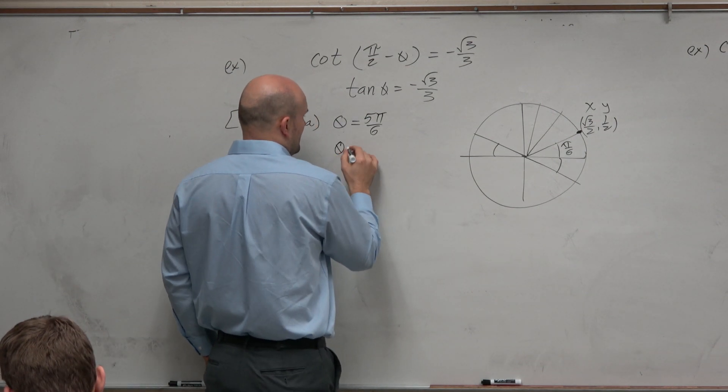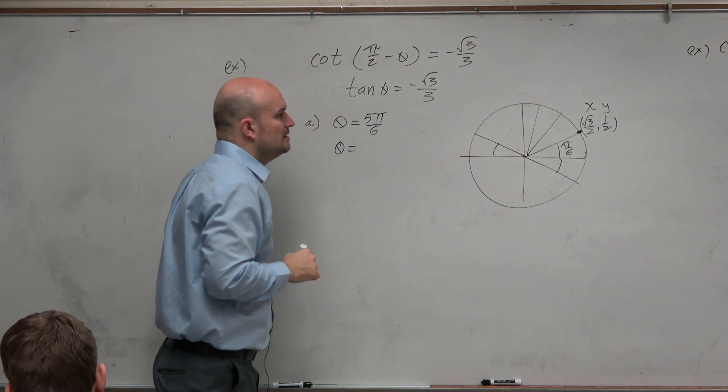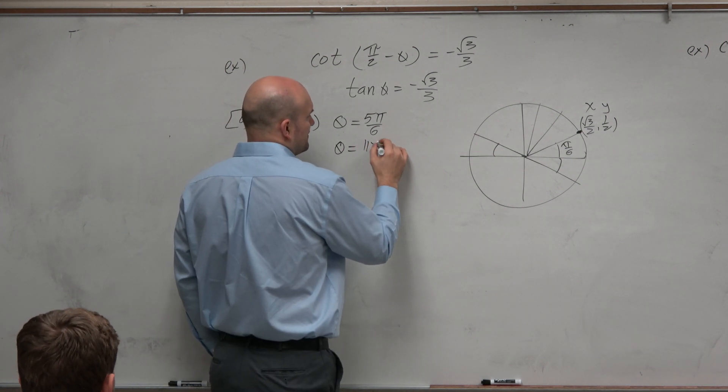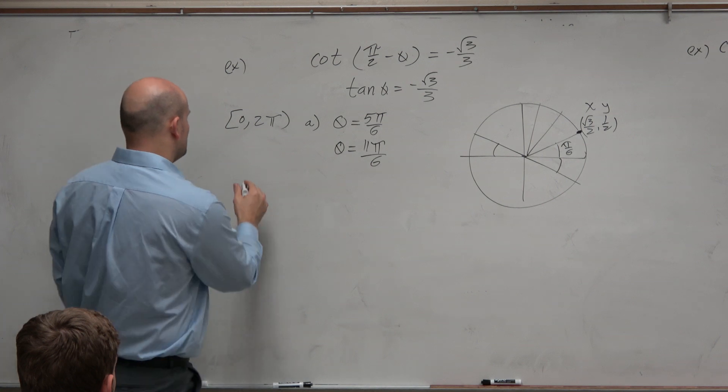And then we could say our other solution is π over 6 short of 2π, which is 12π over 6, which is 11π over 6. So that's the solutions between 0 and 2π.